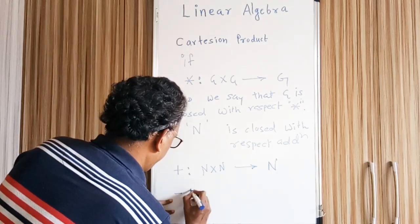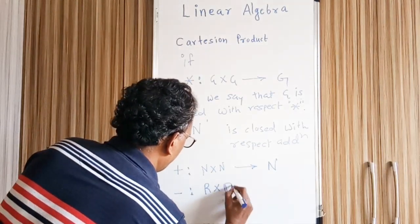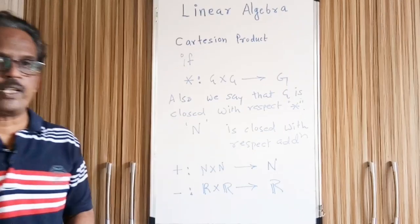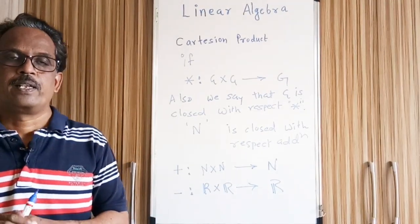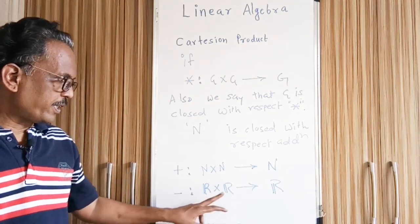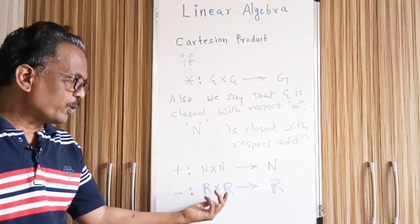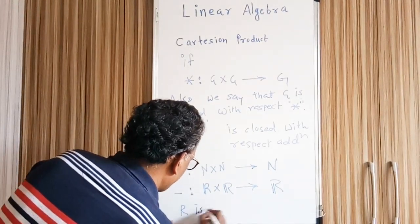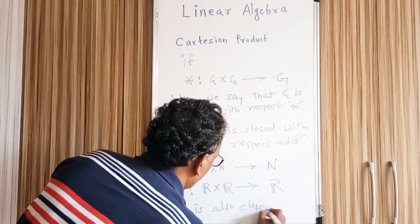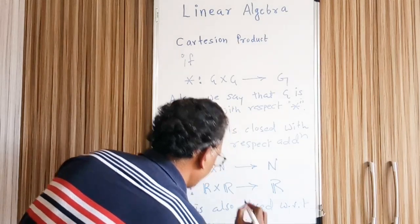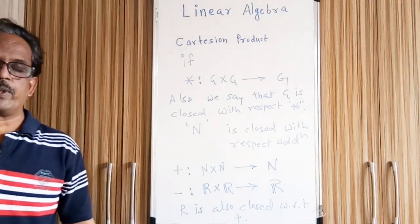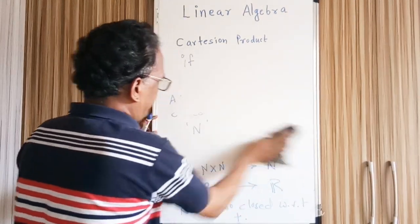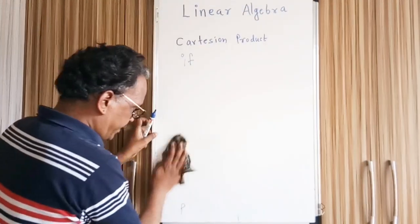Now let us consider another example: minus on R cross R. I am doing subtraction, and if the result of subtraction is falling in the same set R — R is the set of real numbers — if I pick up one real number from here and another real number from here and perform subtraction, the subtraction of two real numbers is always a real number. So R is also closed with respect to subtraction, and this is also a binary operation on the set R.